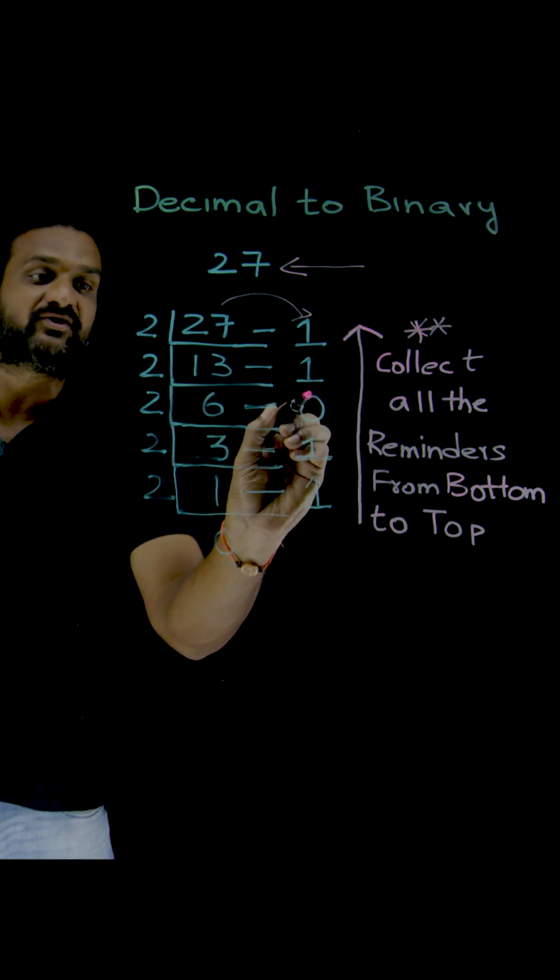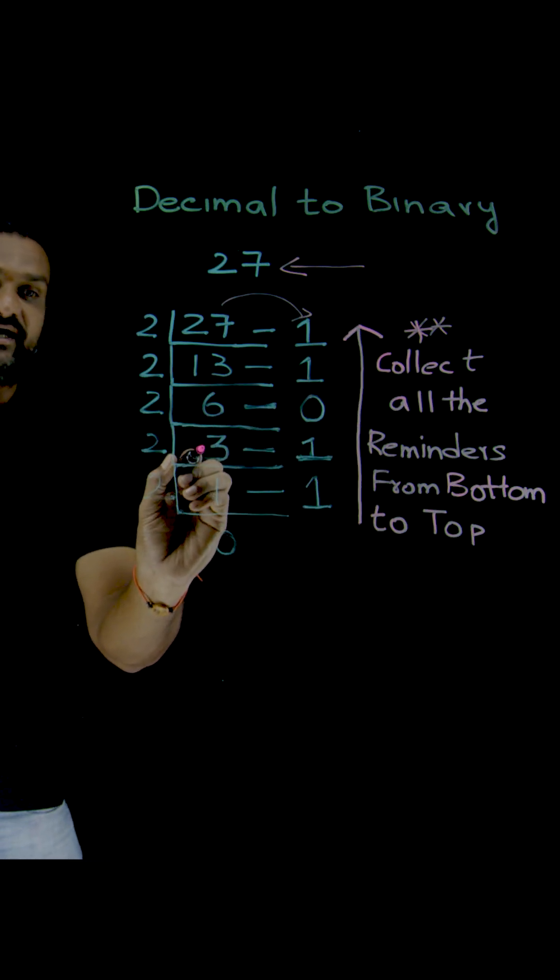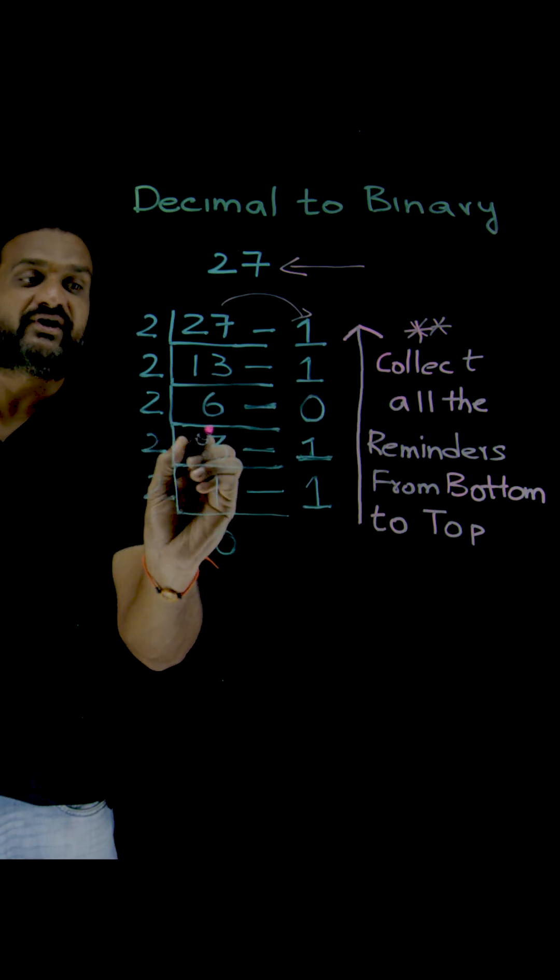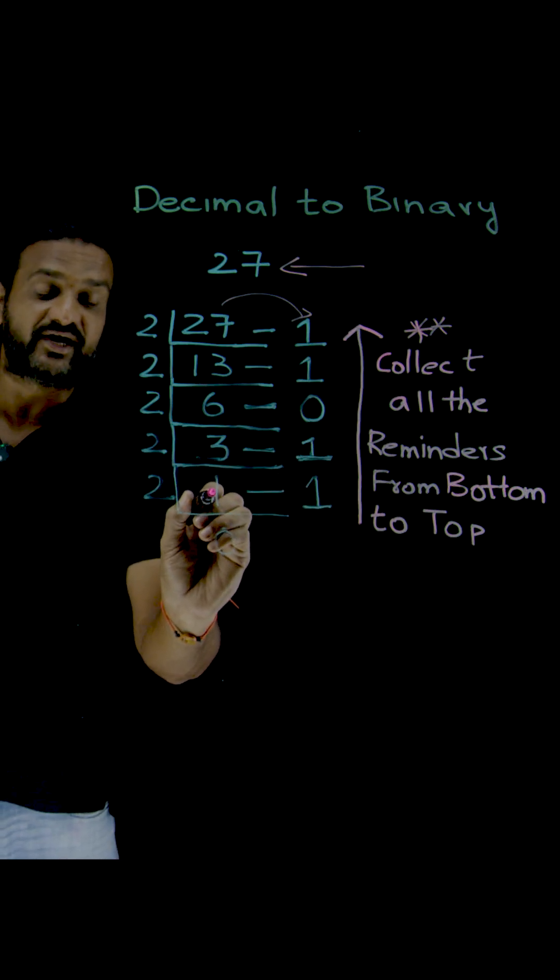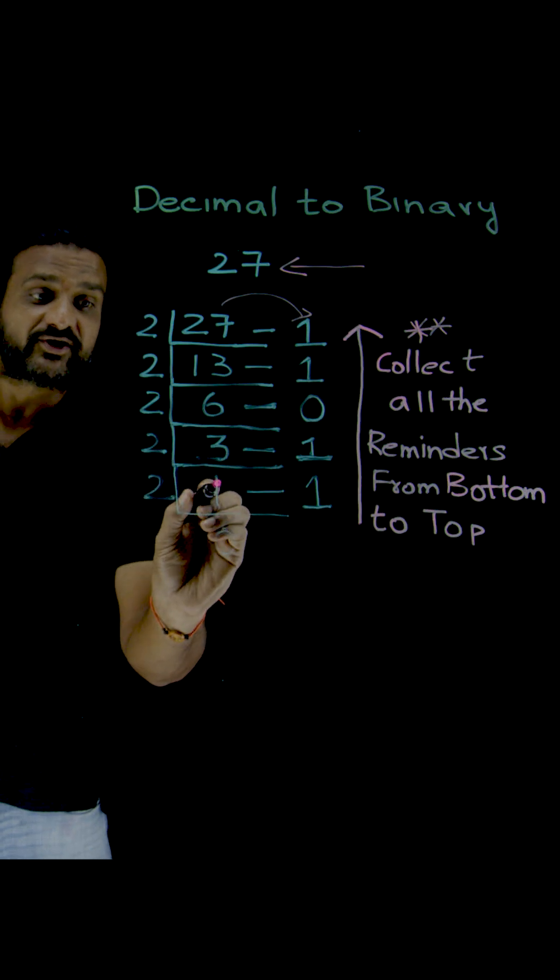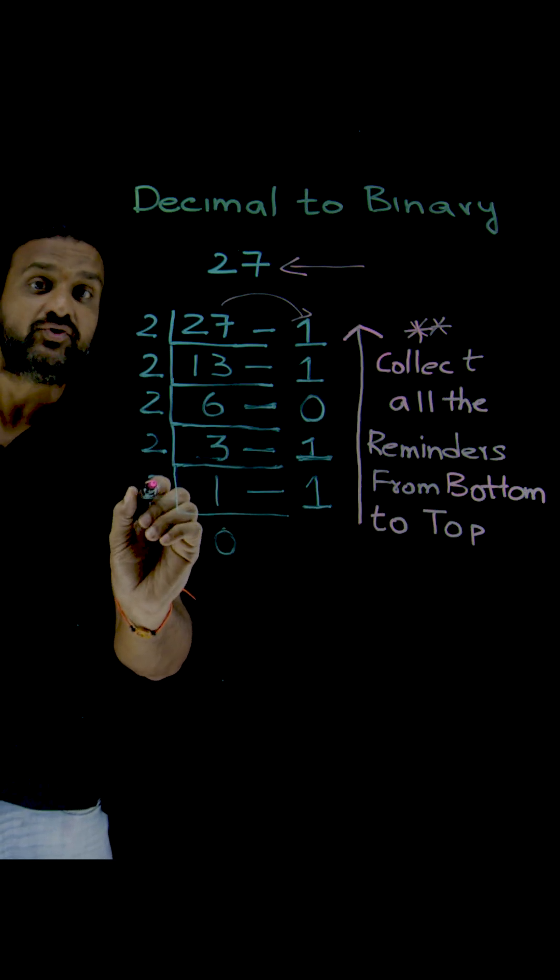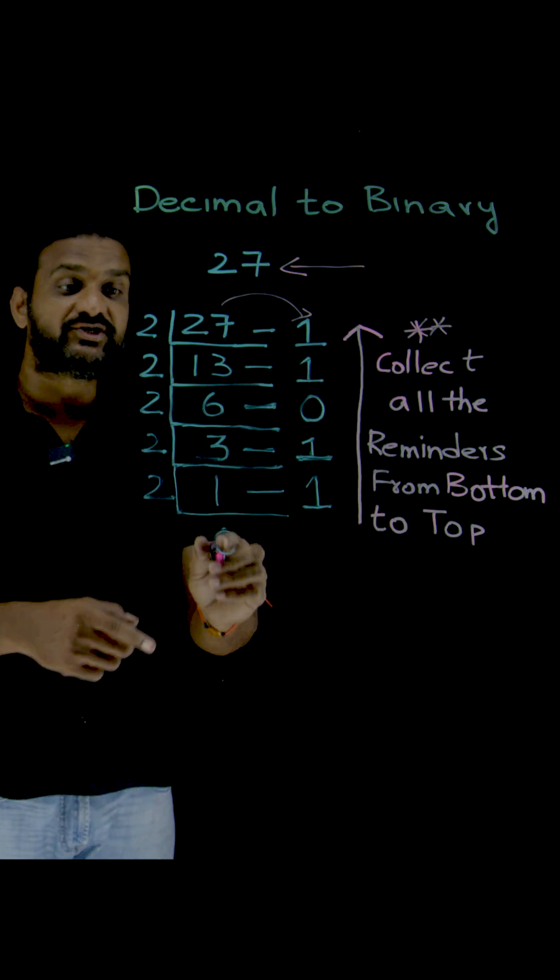6 divided by 2 gives remainder 0 and quotient 3. 3 divided by 2 gives quotient 1 and remainder 1. Finally, 1 divided by 2 gives 0 with remainder 1.